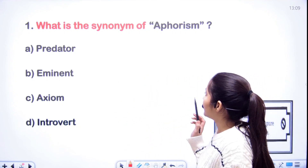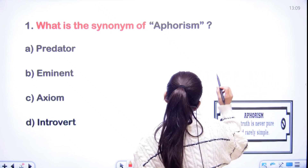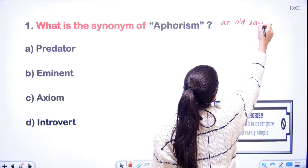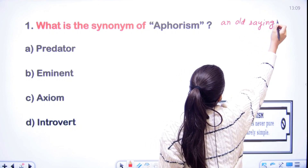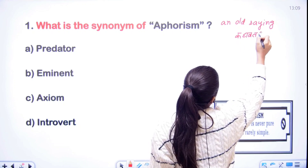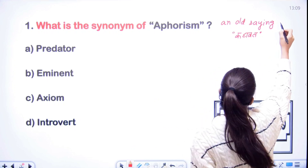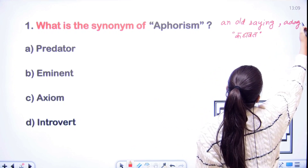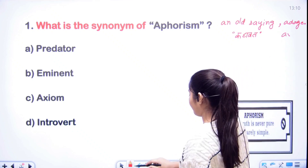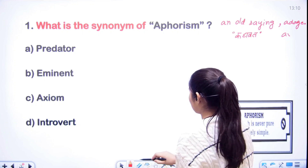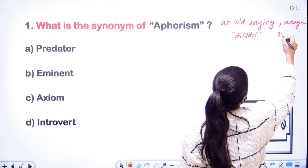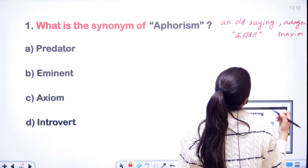So the first word is: what is the synonym of 'aphorism'? Aphorism means an old saying — यानी कि पुरानी कोई कहावत. Its other synonyms are 'adage' — यह word हमने पढ़ चुका है — and 'maxim'. So adage and maxim are its synonyms.